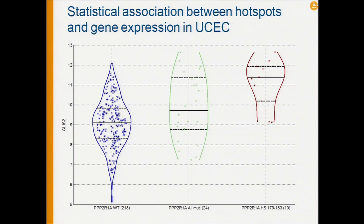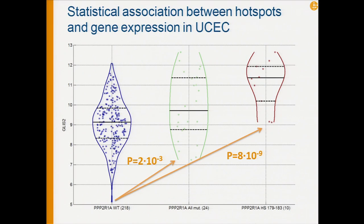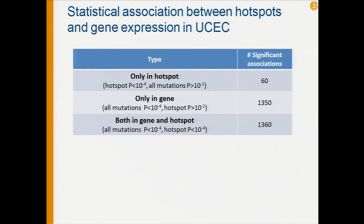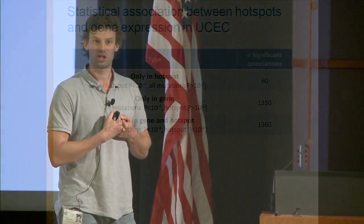What we find much less frequently, but which is also quite interesting, is a much stronger association specifically in a particular mutation hotspot. In this case, the expression levels of GLS2 are higher for the 24 PPP2R1A mutants compared to the wild types. The p-value is moderately significant when looking at all mutants, but if we focus on the 10 samples which have mutations in this particular hotspot, we find a much stronger association. Finding significant associations only in hotspots occurs quite infrequently — 60 cases in UCEC — while many hotspots contain very few samples and offer less statistical power.